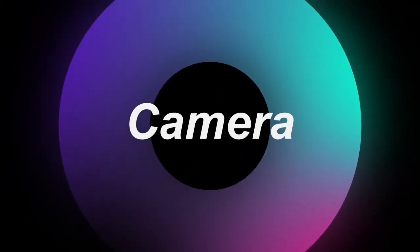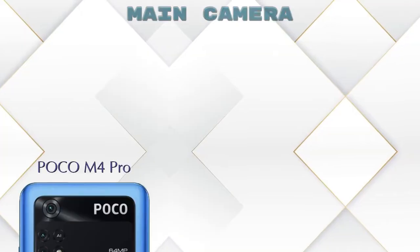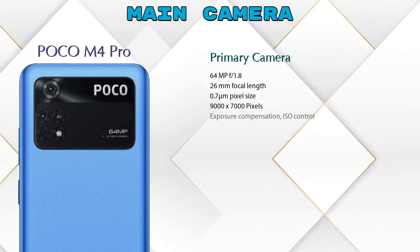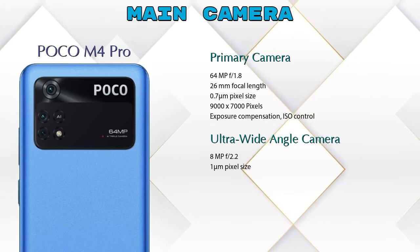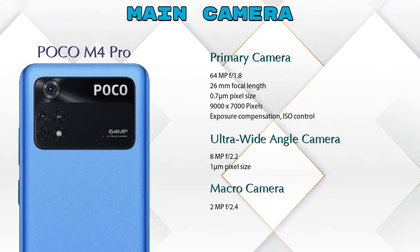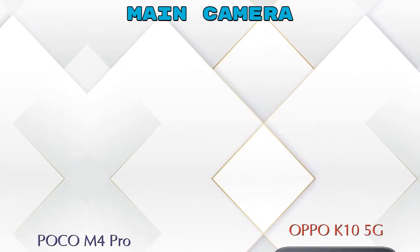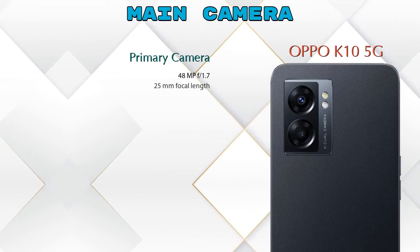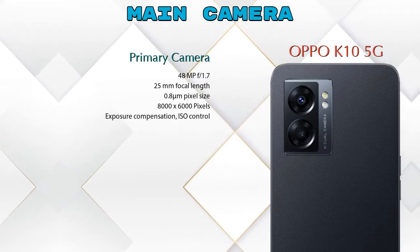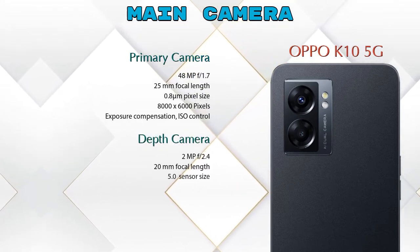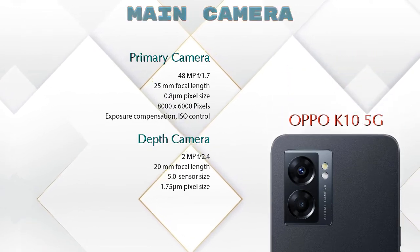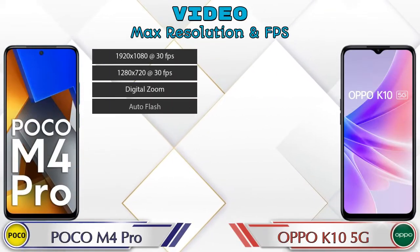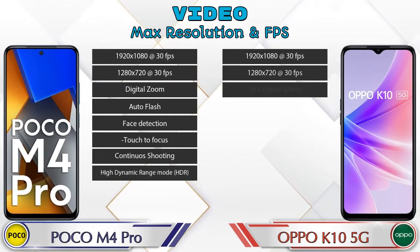Let's see the detail about our favorite feature — camera. First of all, talking about the rear camera: we can see three cameras in POCO M4 Pro — primary camera, ultra-wide angle camera, and macro camera. In K10 5G we can see two cameras — primary camera and depth camera. If we talk about video camera, POCO M4 Pro has eight and K10 5G has seven different types of features available.